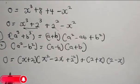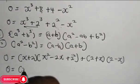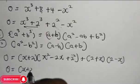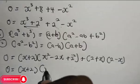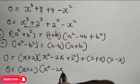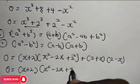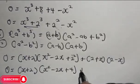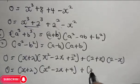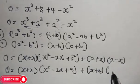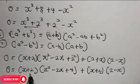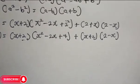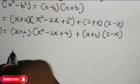So we have 0 equals s squared minus 2s plus 4 in brackets, plus s plus 2 in brackets multiplied by 2 minus x. Now we have a common term which is s plus 2.